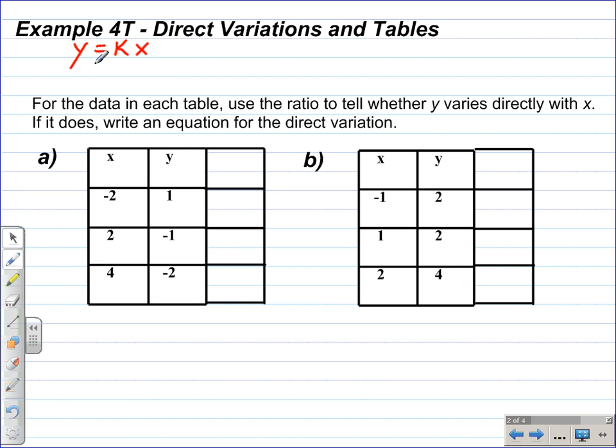If we take this direct variation equation and divide each side of it by x, the x divides out, giving us, on the right, k, the constant of variation, being equal to the ratio of y to x, or y over x. So we have k is equal to y over x.